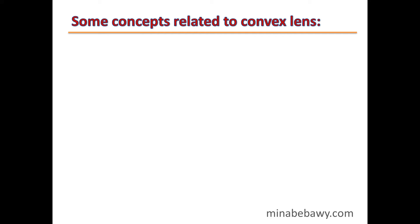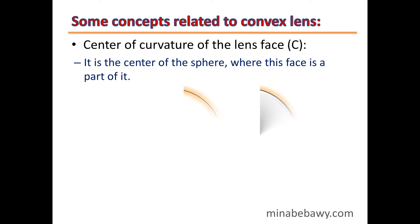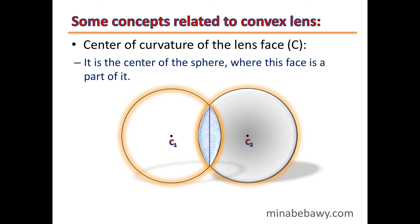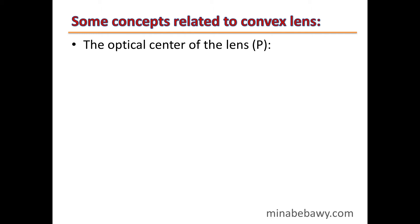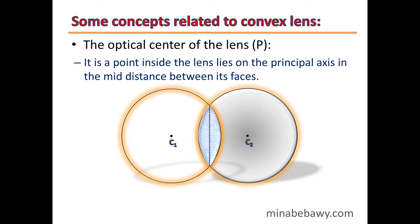Some concepts related to convex lenses: The center of curvature of the lens face (C) is the center of the sphere of which that face is a part. Each lens has two faces, so it has two centers of curvature. The optical center of the lens is a point inside the lens lying on the principal axis at the mid-distance between its faces.